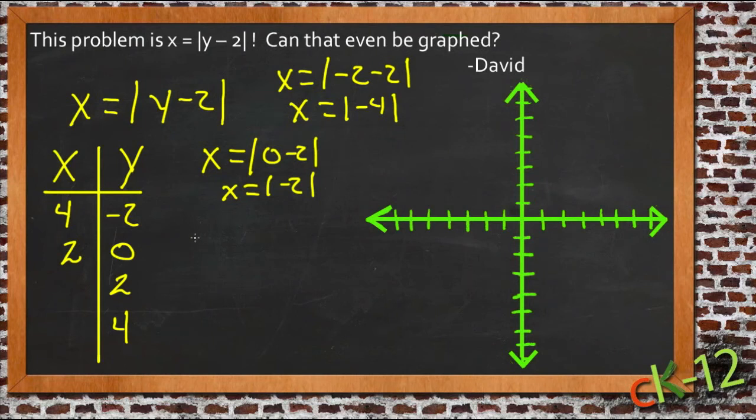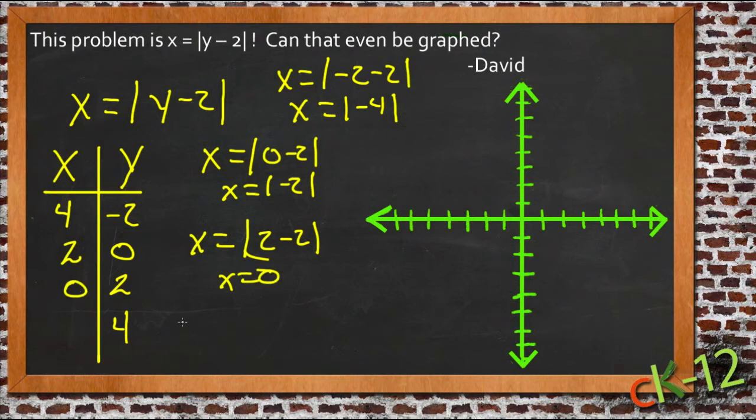If y is 2, then we get x equals the absolute value of 2 minus 2. Well, that's 0, so x would be 0. And then if y is 4, we get x equals the absolute value of 4 minus 2, then we get the absolute value of 2, which is 2. So we get x is 2 whether y is 0 or 4. That's interesting.